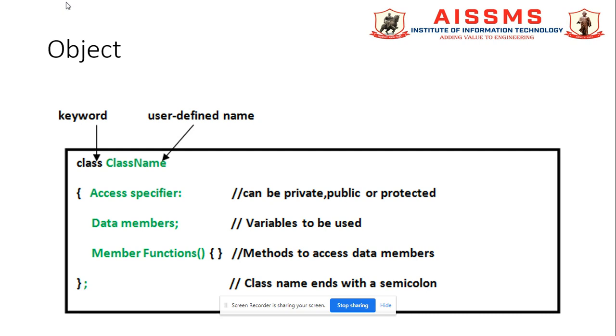See the keywords which are used here: the class and class name. So class name is replaced by a particular class. You can use access specifier, data members, and member functions to represent the object. Various objects we are using in this object-oriented programming.